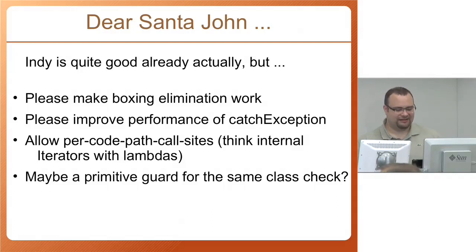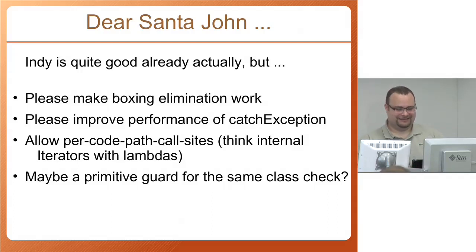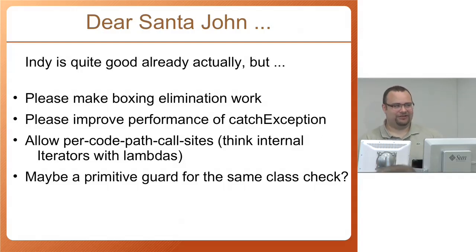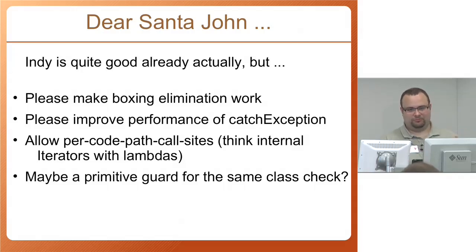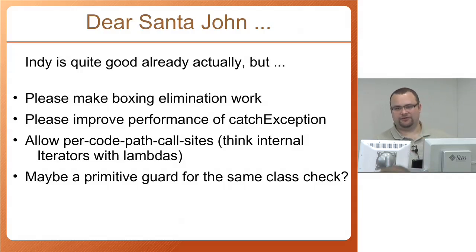My little wish list: I would like boxing elimination to work very nicely, because we really cannot do very much about avoiding that. There's also this catch-exception guard which has quite a drain on performance, which John almost already promised to improve. It would be very nice to have per-call-site, per-code-path call sites for internal iterators, which I also use a lot in Groovy — and that would be useful for lambda expressions too. Some predefined guard for checking the same class, even though that's optional because I found it's very fast. Well, that's it — for further questions, just come to me or come to the workshop. Thank you very much.